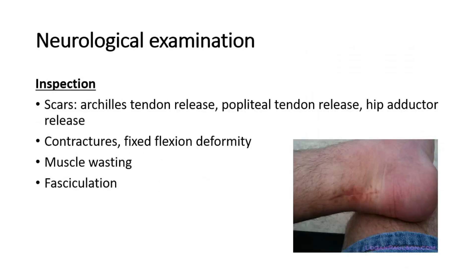After that, we start with the neurological examination. In inspection, some expected findings would be to look for scars, especially at certain areas such as Achilles tendon release scar — this picture shows a scar of the Achilles tendon release. We also inspect for any contractures or fixed flexion deformity, any muscle wasting, and fasciculation noted when we tap on the muscles.